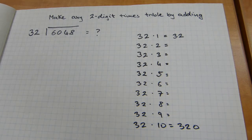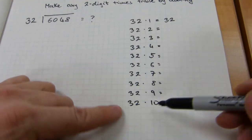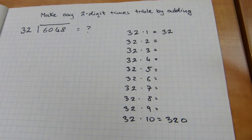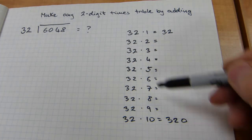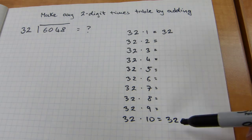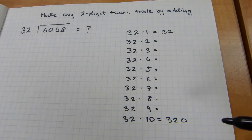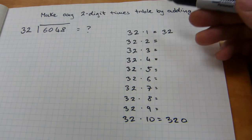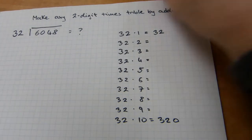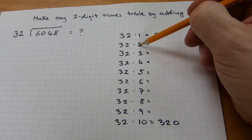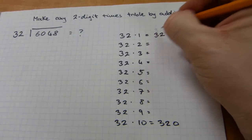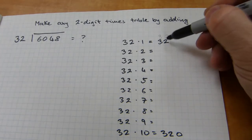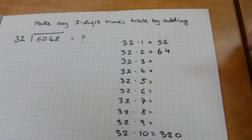Here's how it works. 32 times 1 — any number times 1 is just itself. Any number times 10 is the same number with a 0 after it, so those are the bounds. If anything is more than 320 in this range it's obviously wrong, and halfway through, 32 times 5 should be around 160 — half of 320. Now, 32 times 2 is the same as 32 times 1 plus 32 times 1. 32 times 1 is 32, so 2 plus 2 is 4 and 3 plus 3 is 6: 32 times 2 is 64.